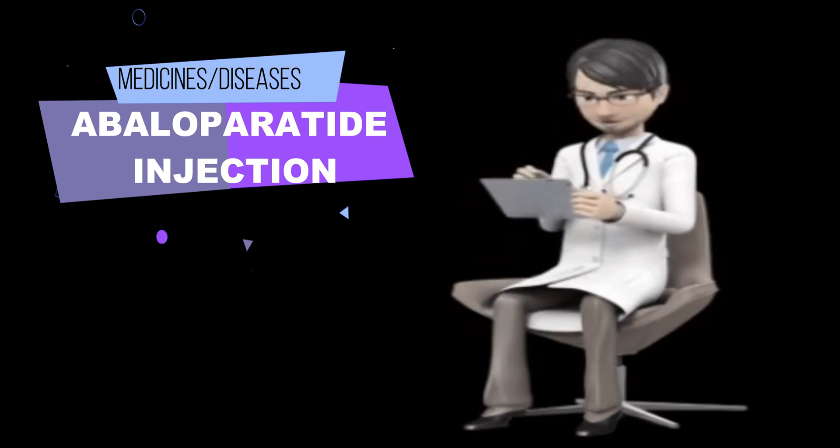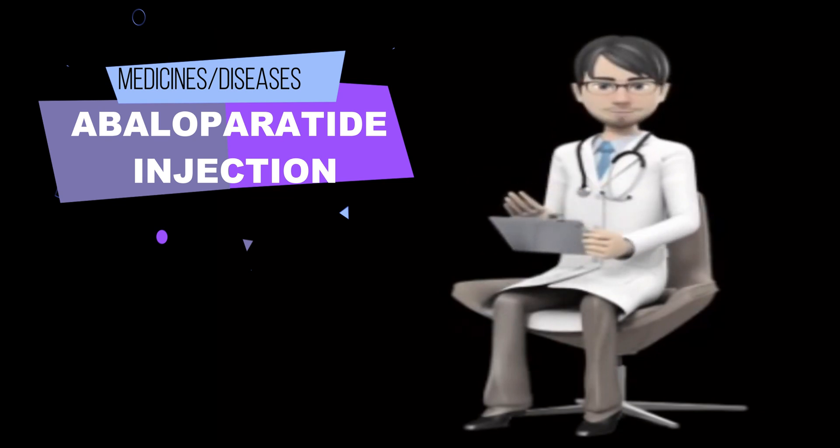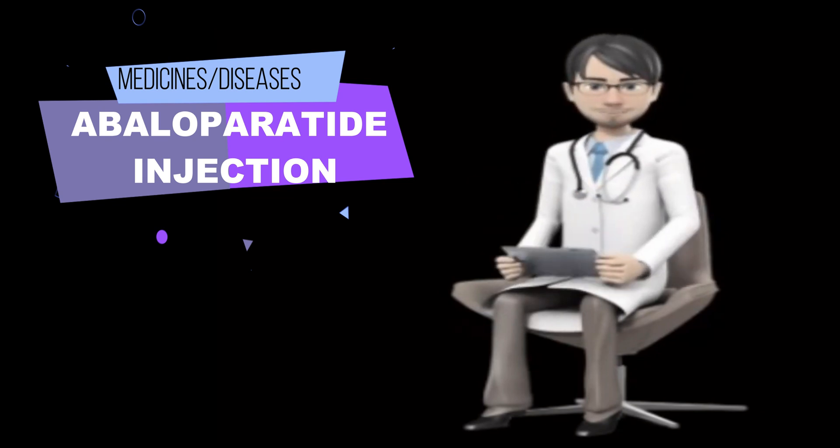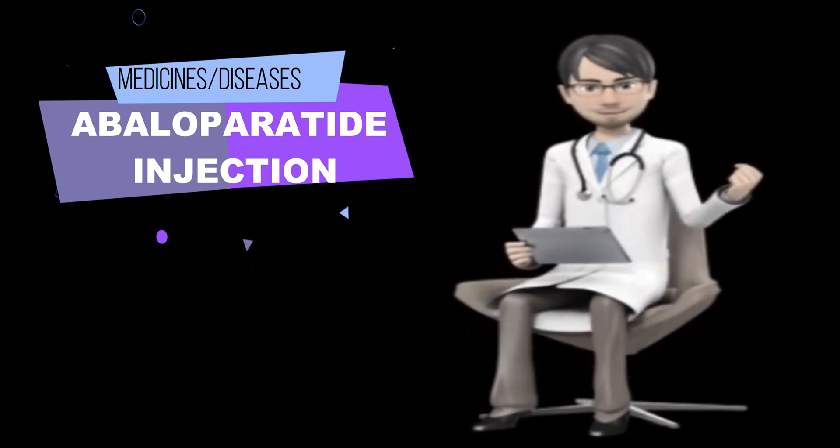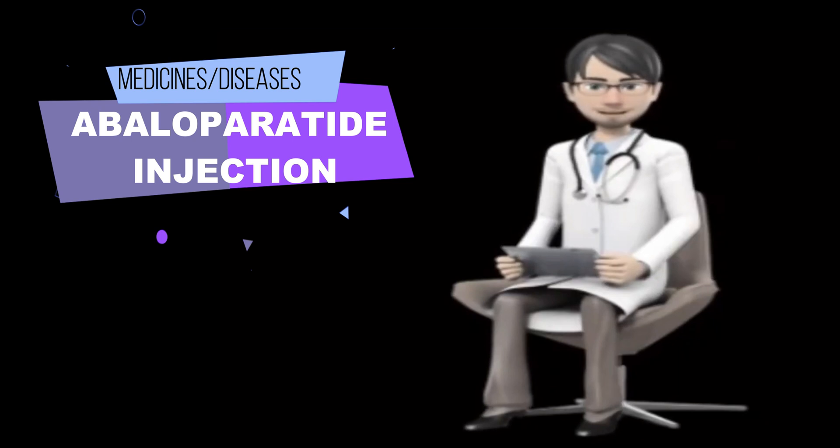Abaloparatide injection contains a synthetic form of a natural human hormone called parathyroid hormone, or PTH. It works by causing the body to build new bone and by increasing bone strength and density, or thickness.